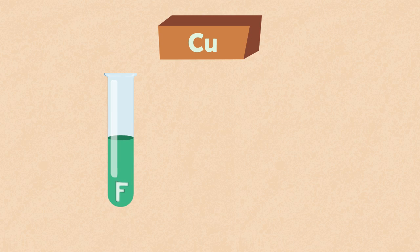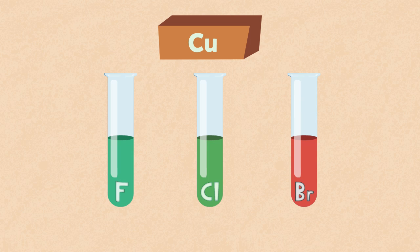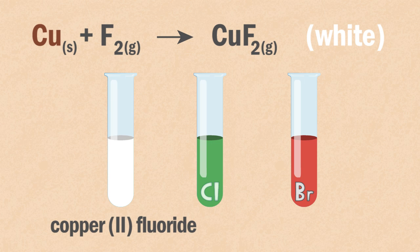Next, if you react copper with an excess of a halogen, that's fluorine, chlorine or bromine, it will produce a copper halide. These halides have different colours, as shown by the equations on your screen.